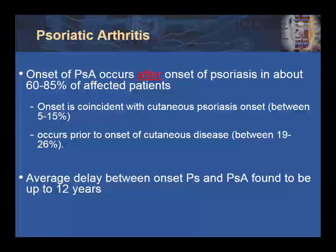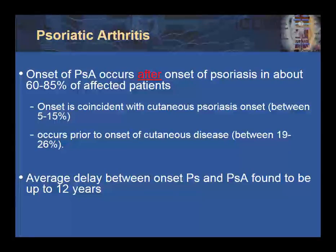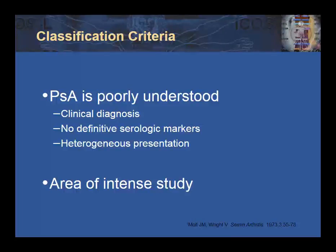So patients with psoriasis need to continuously be monitored for new onset joint pain that may signify psoriatic arthritis. Unfortunately, psoriatic arthritis is relatively poorly understood at this point in time. It remains a clinical diagnosis, and there are no serologic markers that will allow us to make a definitive diagnosis. Additionally, it has a heterogeneous presentation, which adds to challenges in making a diagnosis. Luckily, it is currently an area of intense study, and hopefully making a diagnosis of psoriatic arthritis becomes easier in the future.